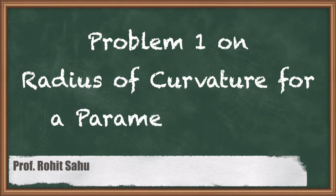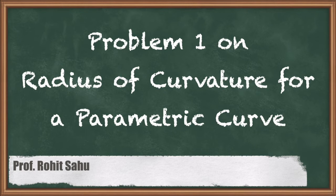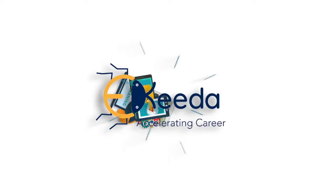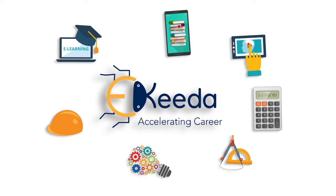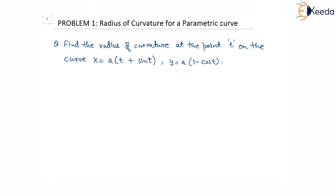Hello everyone. In this session we will discuss a question on radius of curvature for a parametric curve. The given question is to find the radius of curvature at the point t on the curve x equal to e times of t plus sin t and y equal to e times of 1 minus cos t.